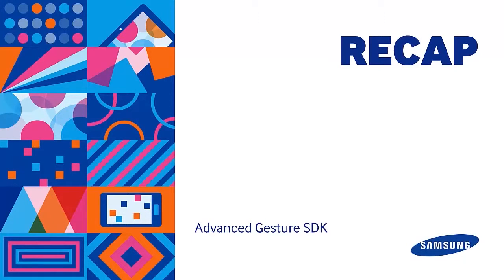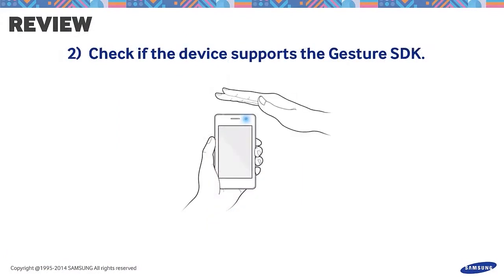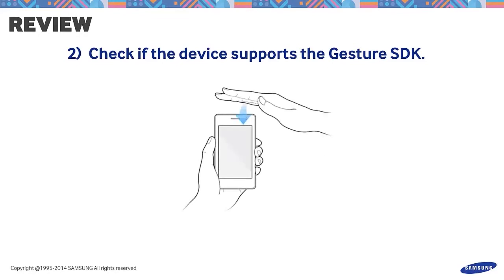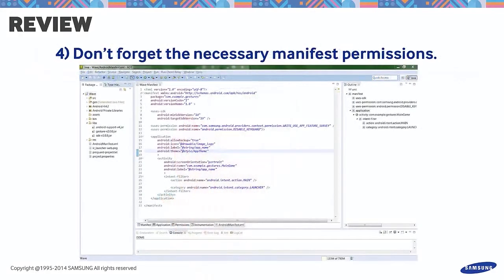To sum up the things we learned, let's have a recap. Don't forget to include the necessary SDK JAR files in your project. Check if the device supports the Gesture SDK — the hand gesture requires a Samsung smart device with a gesture sensor. The speed measurements of the hand gesture work in devices with a gesture sensor that provides speed data. Remember, speed is measured through the emission of infrared rays that reflect off the user's hand via a transmitter. The speed is measured on a scale of 0 to 100, where 0 is very slow and 100 is very fast. Don't forget to add the necessary manifest permission: write use app feature survey.